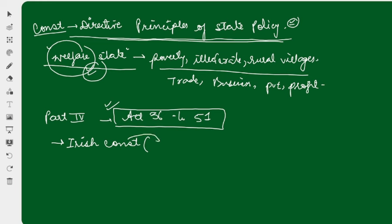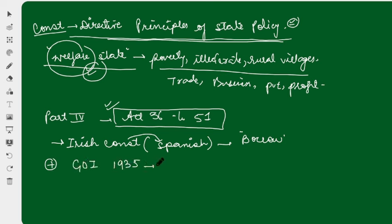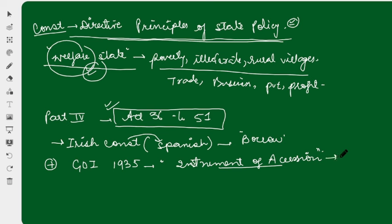In turn, the DPSP concept itself was borrowed by the Irish from the Spanish Constitution. Additionally, the Government of India Act 1935 had a document called the Instrument of Accession, which also has some conceptual resemblance with our DPSP. These are some important facts you have to remember.